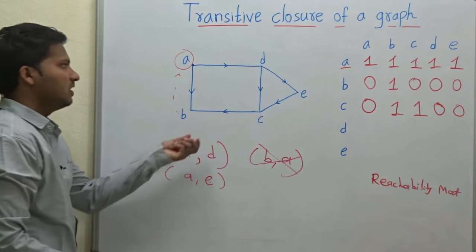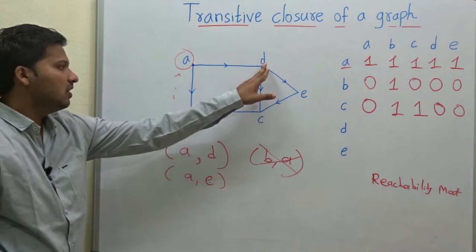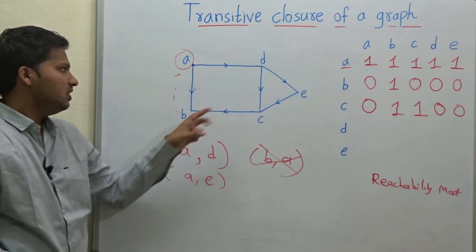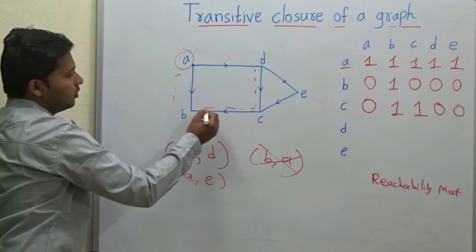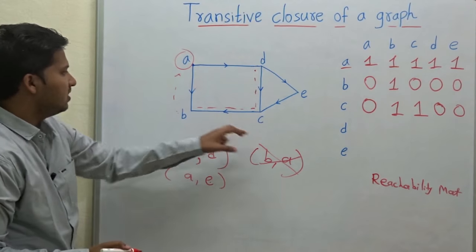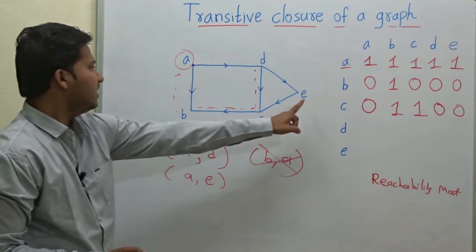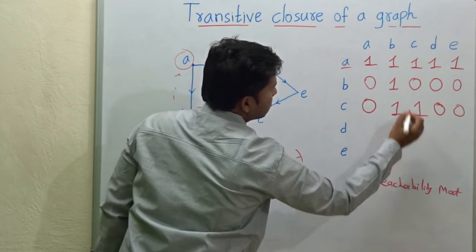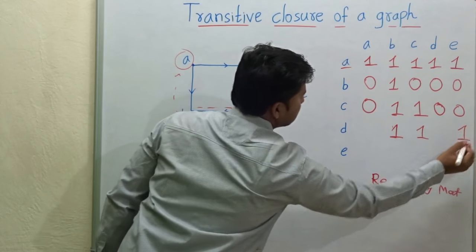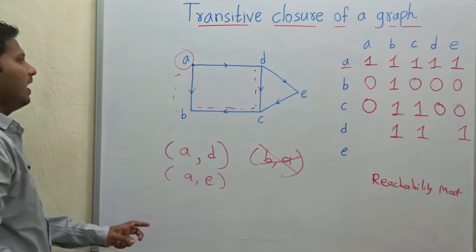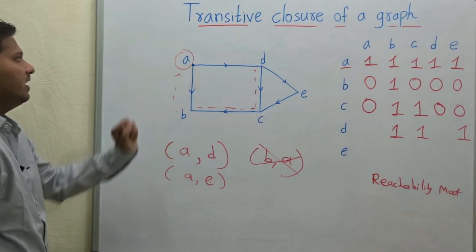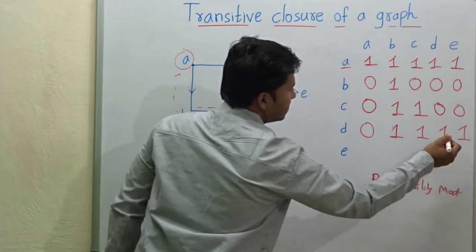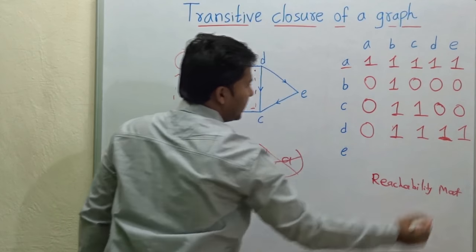Now let's check for vertex D. From vertex D, you can reach vertex C, E, then B. There is a path from vertex D to B. So from vertex D, you can reach B, C and E, so let's mark those as 1. For vertex A, it will be 0 because you cannot reach there. And to itself, it can reach, so that will be 1.